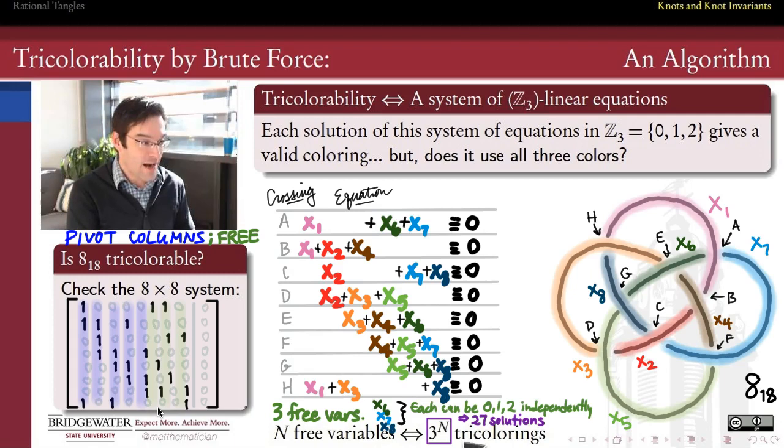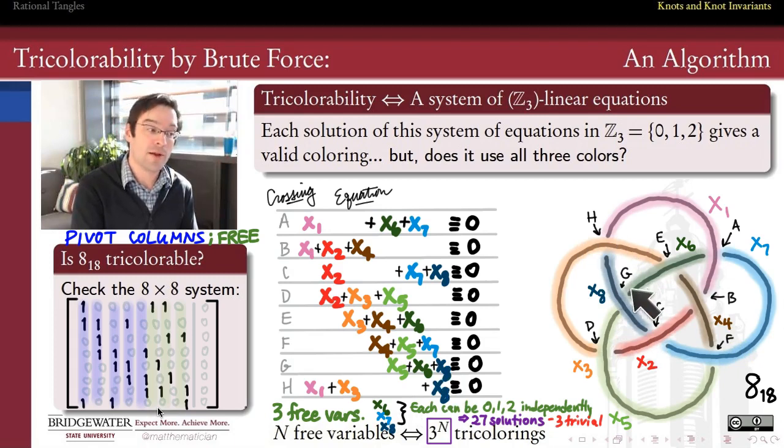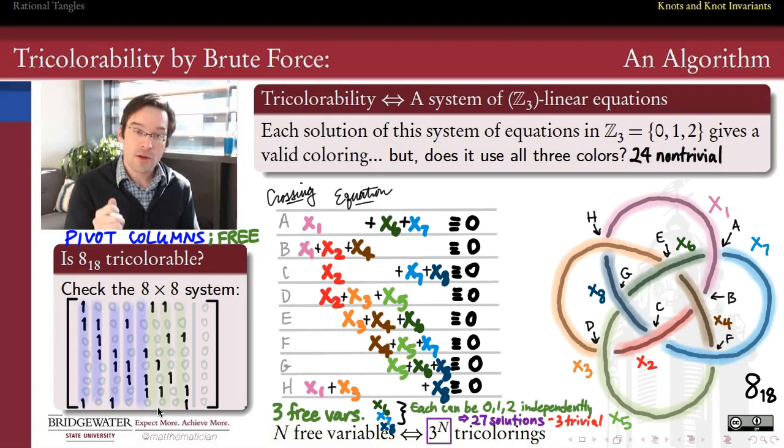But again, not every one of those tricolorations is going to be an interesting one. What we'd like to know is how many of them are trivial and how many of them are not trivial. Well, we already know that three of them are going to be trivial. Those are going to be the ones where I choose x6, x7, and x8 to all be the same. So I color all three of these zero, or I color all three of them one, or I color all three of them two. Each of those is then going to give me a trivial coloration. So I'm going to subtract those away. And I therefore have 24 colorations which are non-trivial.